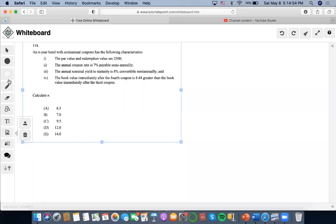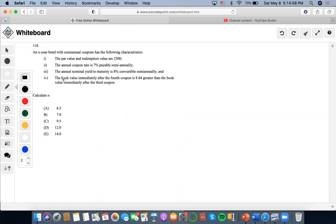All right, so what we're going to do here is we know that there is a par value in redemption and they're also mentioning book value. So this is going to be a book value intertwined with the bond pricing formula concept type question.